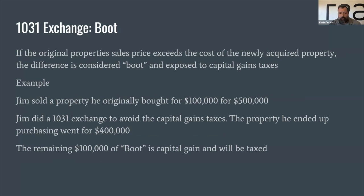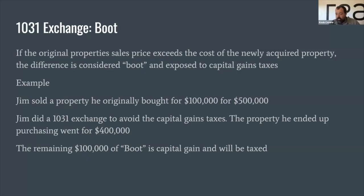This is hugely advantageous for anybody that wants to, say, cash out of a single-family home and move it into a better cash-flowing asset. Now, boot — boot is basically the money left over if your exchange doesn't match numbers. If the original property sale price exceeds the cost of the newly acquired property, that's called boot. Example: Joe bought for 100,000 and sold for 500,000, did a 1031 exchange, but the property he purchased went for 400,000. He had 500,000 in this cup and poured 400,000 into the next cup — the remaining 100,000 he keeps in his pocket. That 100,000 is boot and is subject to capital gains taxes — about 34,000 to the federal and state government.